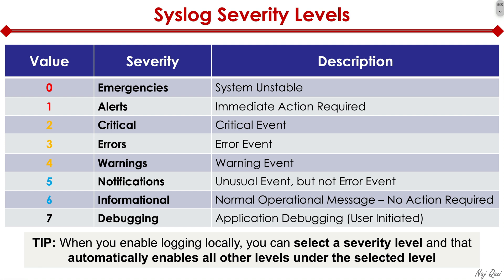One important tip: when you enable logging locally, you can select a severity level, and that automatically enables all other levels under that selected level. For example, if you specify severity level five, you're going to be able to see all messages zero through five, but you won't see level six or level seven messages.